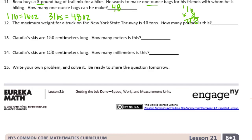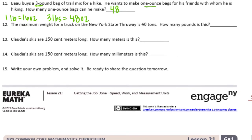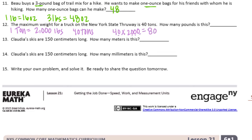Number 12: The maximum weight for a truck on the New York State Thruway is 40 tons. How many pounds is this? We know that 1 ton is equal to 2,000 pounds. So for 40 tons, we need to do 40 times 2,000. 4 times 2 is 8, and then we have 1, 2, 3, 4 zeros, which would be 80,000 pounds.